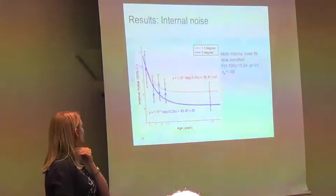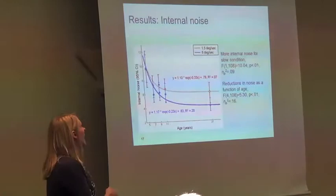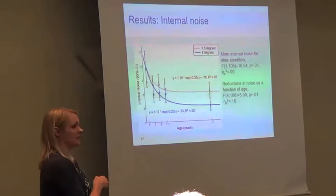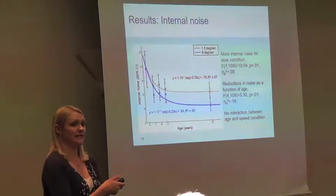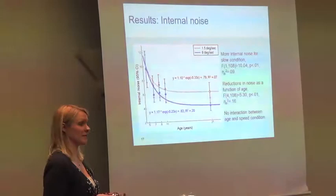Looking at internal noise first: overall, there is more internal noise for the slow condition than for the fast condition. It also seems that internal noise reduces as a function of age — we fit exponential functions to the individual data relating age to internal noise. There was no interaction between age and speed condition, meaning the slopes of the two functions are very similar, so internal noise seems to develop at a similar rate for both slow and fast speeds.